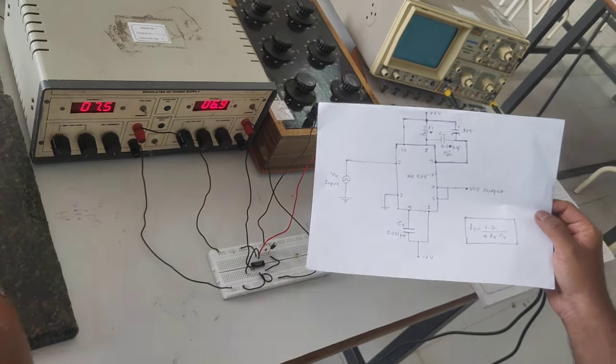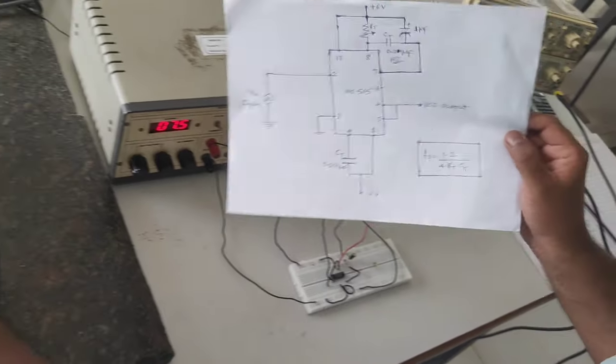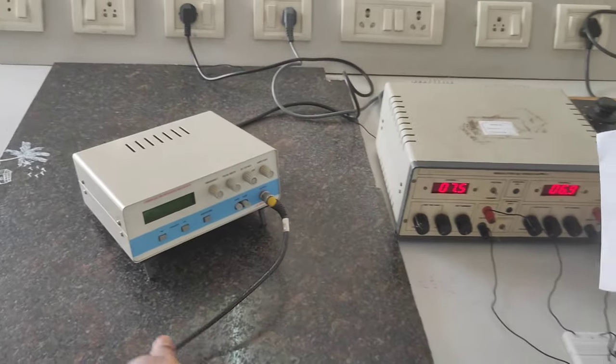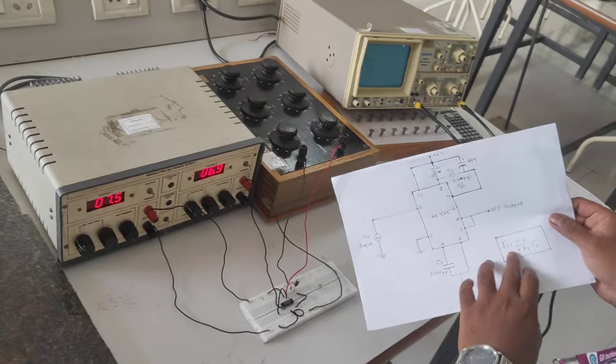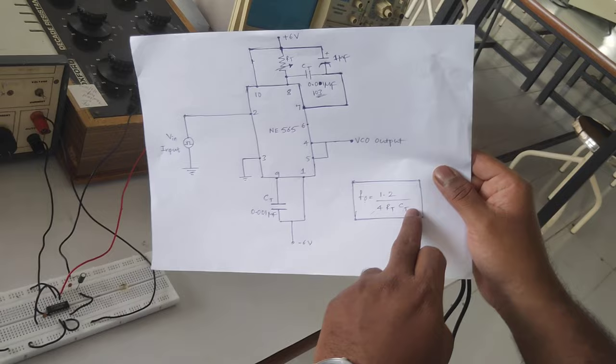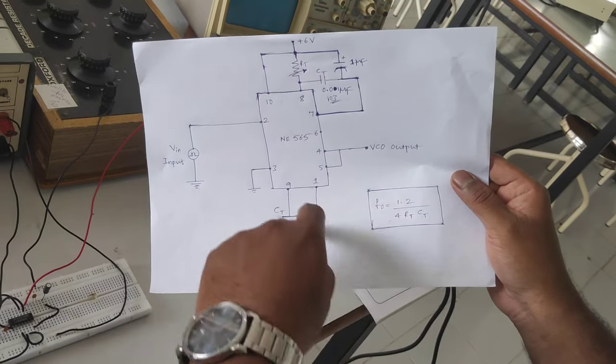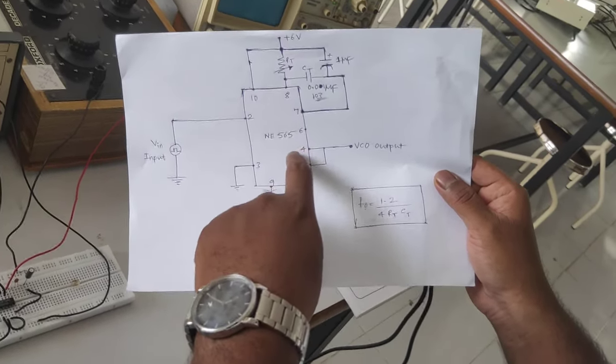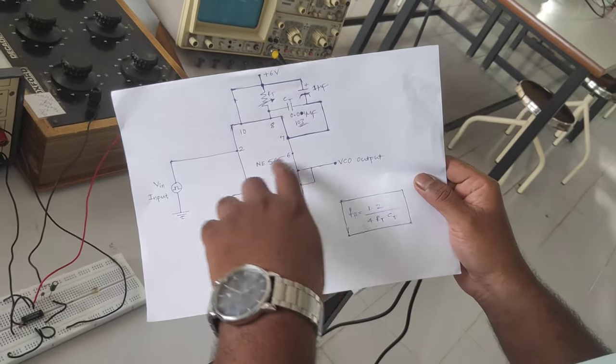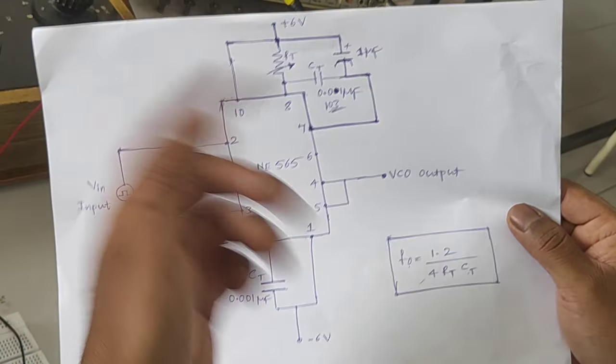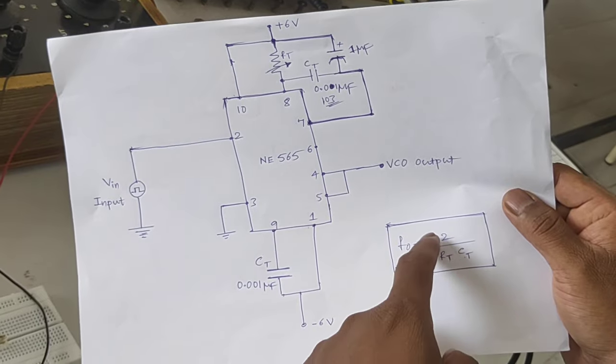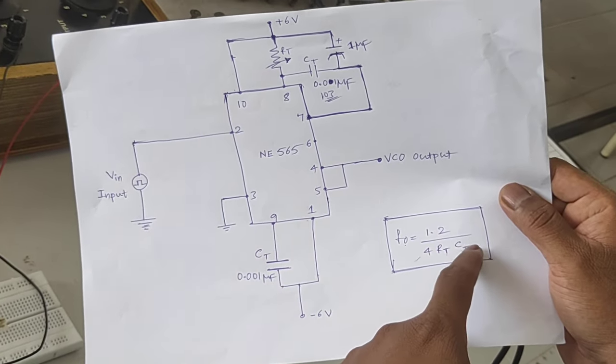So coming to this experiment, keep this function generator in switch off condition initially. The main core formula involved in this is F0 equals 1.2 divided by 4 RT into CT. So what is this F0? This IC 565 is producing one free running oscillation called voltage control oscillator within this IC that is producing one square wave. The square wave oscillation F0 depends on this formula 1.2 divided by 4 into RT into CT.